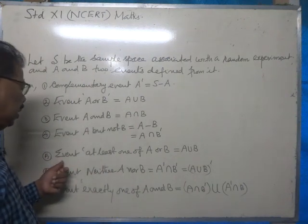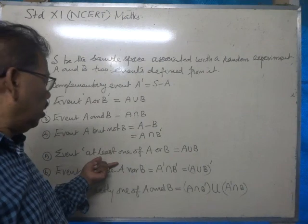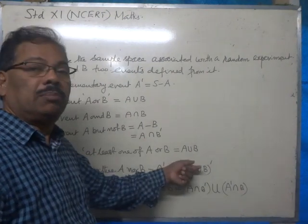Now, event at least one of A or B. Events at least one of A or B means A union B itself.